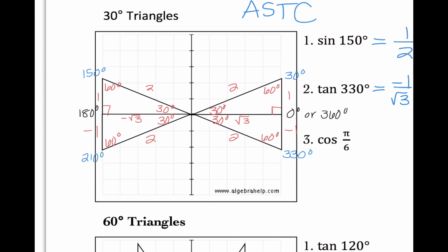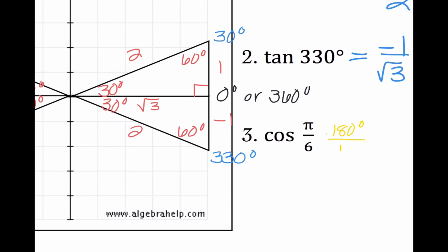Our last one here says cosine of pi over 6. All of a sudden we're dealing with radians. You may remember that this actually means 1 sixth of a semicircle, which ends up being 30 degrees. Or we could use the skill from our very first lesson, where I can turn this into degrees by multiplying by 180 over pi, and I end up getting the cosine of 30 degrees. Quadrant 1 is the easiest one to work through, because everything in quadrant 1 — if the angle's 30, it's 30 degrees away from the closest x-axis, so I can just go off that angle. Cosine is adjacent over hypotenuse, so we get radical 3 over 2.